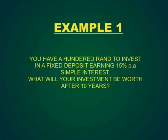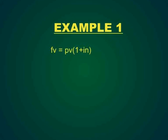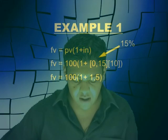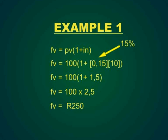Let us go through a few basic examples. Example 1: You have 100 Rand to invest in a fixed deposit earning an interest rate of 15% per annum, simple interest. What will the value be after 10 years? Using the simple interest formula: Future Value equals Present Value times (1 plus i times n), which is 100 times (1 plus 0.15 times 10), equals 100 times 2.5, which equals 250 Rand.